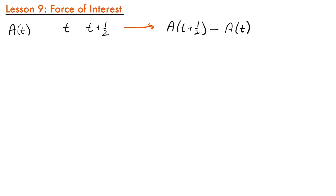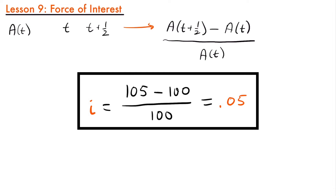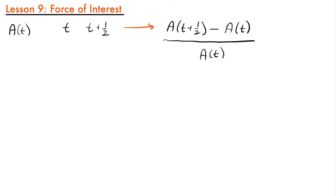If I wanted to know the interest rate for that period, I would take that interest amount and divide it by the amount I started with, A(t). In our example, that's $5 divided by $100, giving us the 5% interest rate. This equation is equal to our effective semi-annual interest rate for the one-half year period from t to t plus one-half.